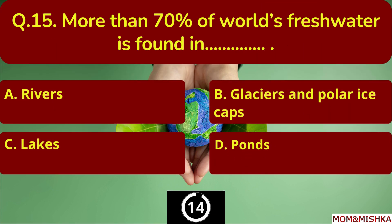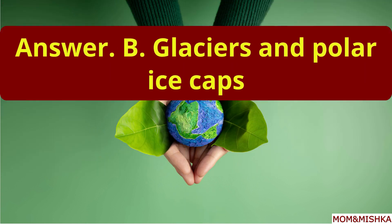More than 70 percent of the world's fresh water is found in blank. In glaciers and polar ice caps — option B.